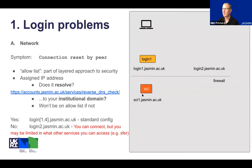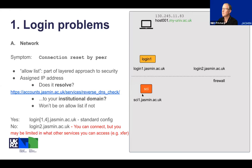The symptom you'll see if you have a network issue is 'connection reset by peer' or similar. Essentially, Jasmine has an allow list which restricts access from the entire internet down to institutions or networks that we trust. When you connect from your university network, your IP address should resolve to a hostname like host001.myuniv.ac.uk. We allow list the whole star.ac.uk domain, but other non-university domains need to be added by asking the help desk.